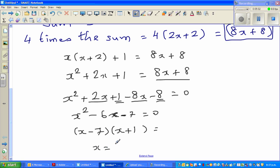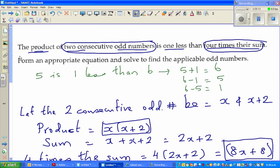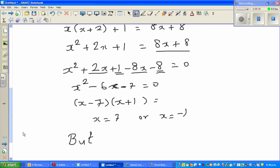But we are thinking of positive numbers. We are talking about two odd numbers - they are positive. So we are saying x is greater than 0. So your x is 7, which implies x plus 2 is 9.